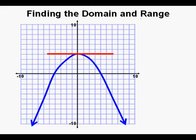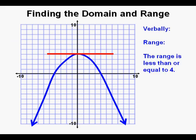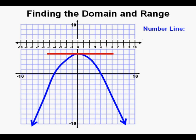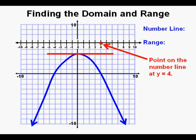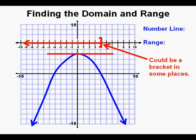Now let's define the range of this relation. The top of the graph is marked by a horizontal red line segment which is an upper boundary. Verbally we could say the range is less than or equal to 4. We can say this because 4 is an output value and also any real number less than 4. On a number line, we have the point drawn at 4, and since all real numbers less than 4 are part of the range, we draw the arrow to the left from that boundary point. In some places you might see a left-facing bracket instead of a point on a number line.